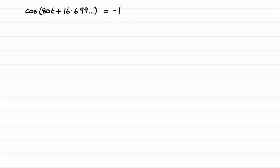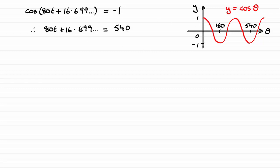And if we look at the graph of y equals cos theta, we know that it equals negative 1 when it's at 180 degrees and at another 360 degrees beyond 180, that's going to be 540 degrees. So all we need to do is equate the part in the brackets to 540. So if you do that, you're going to get 80t plus 16.699 and so on equals 540.